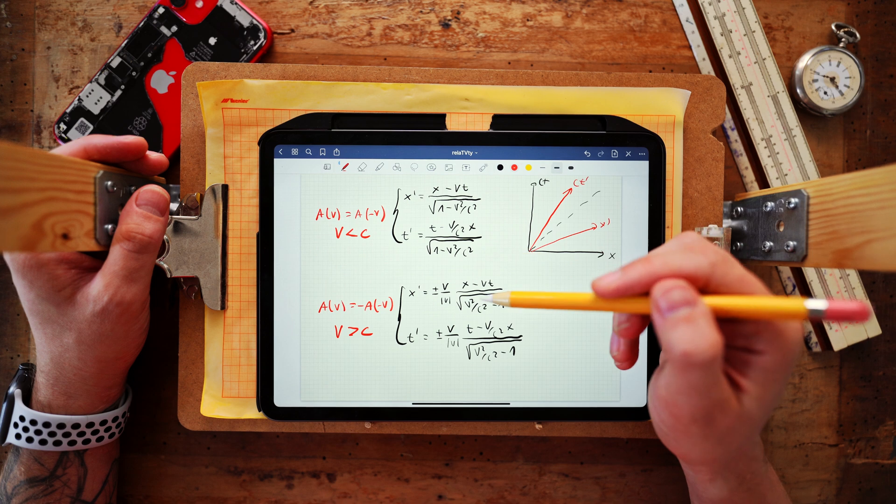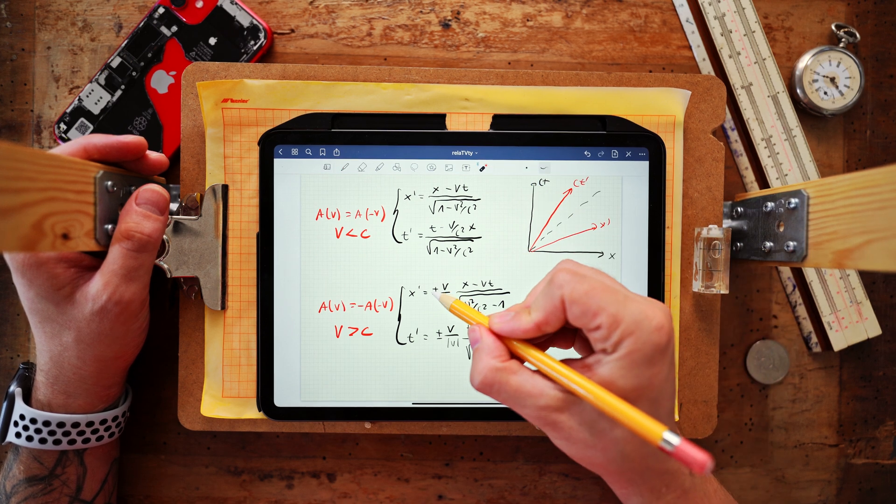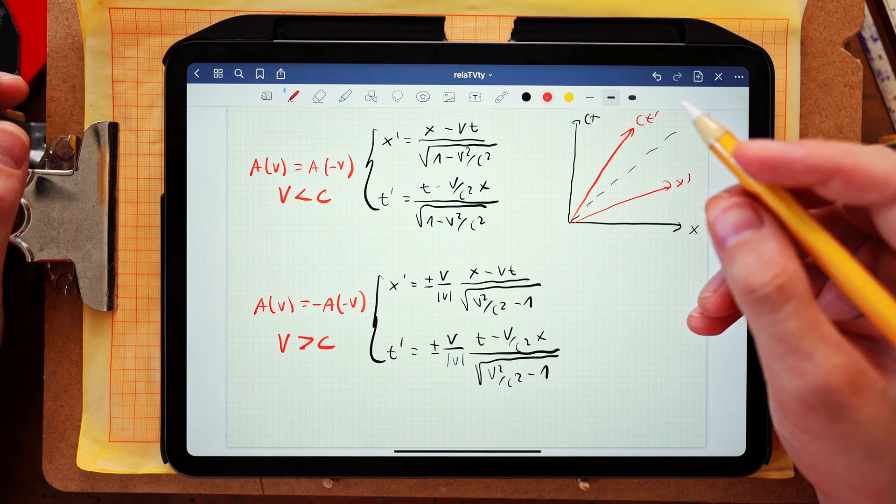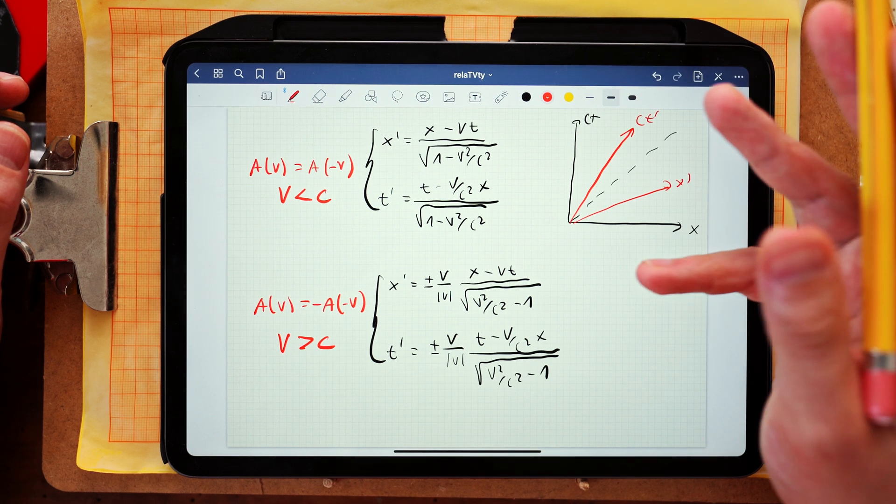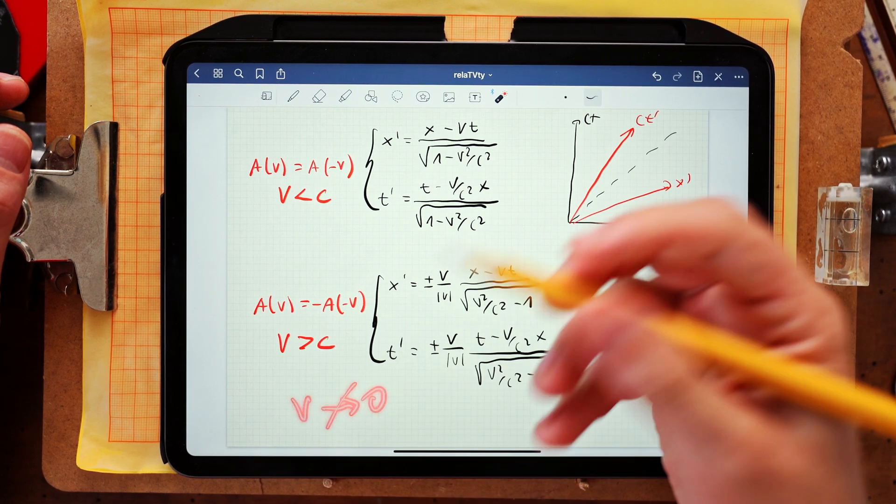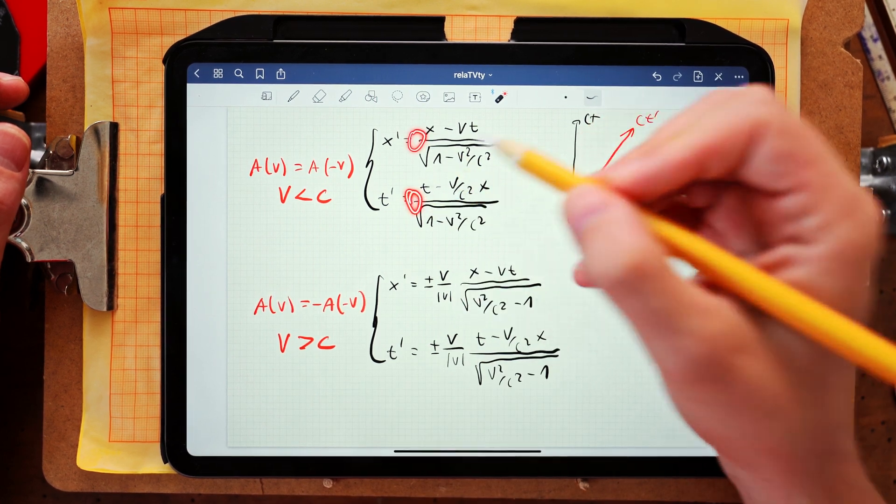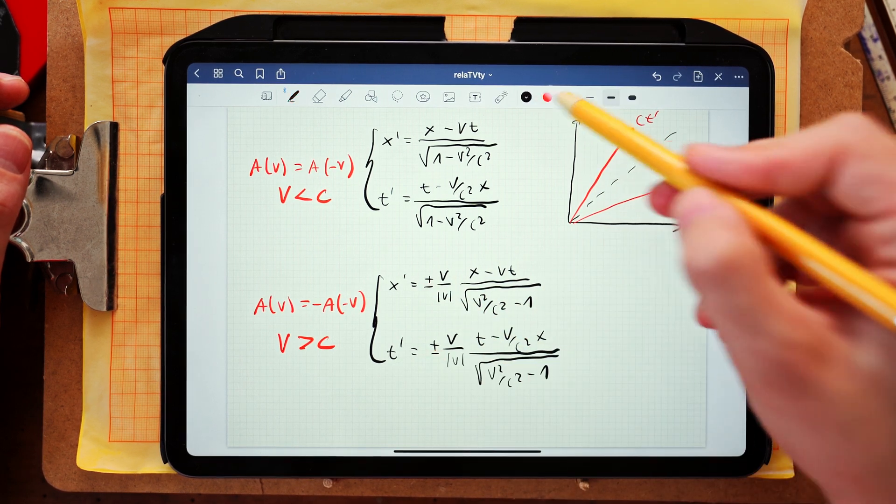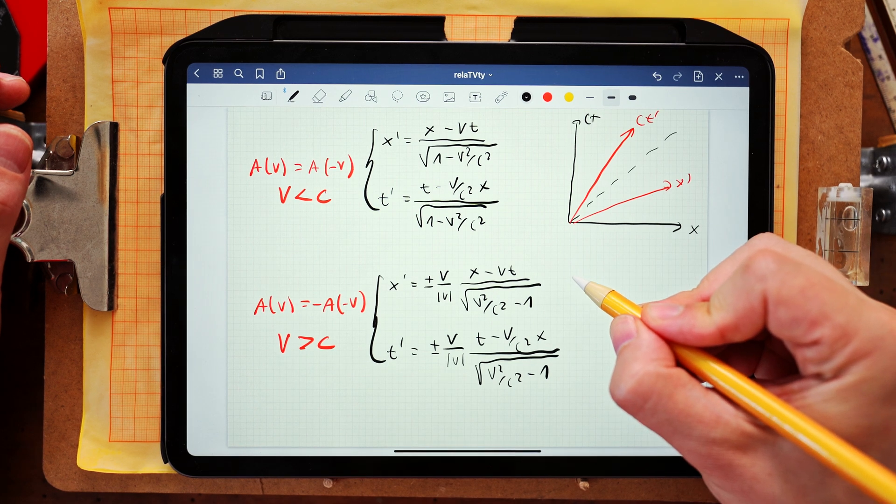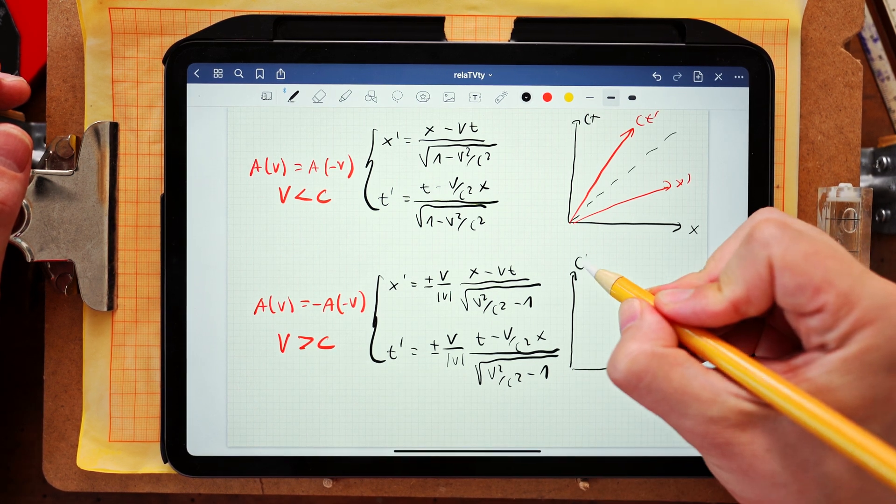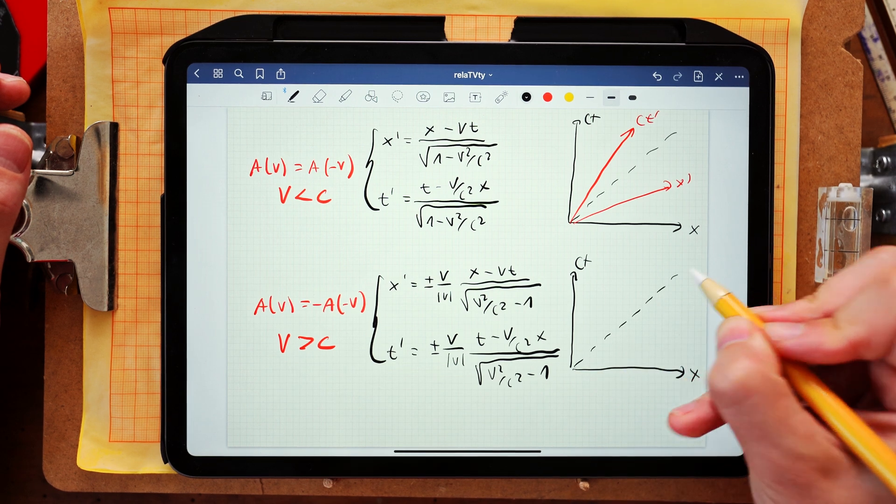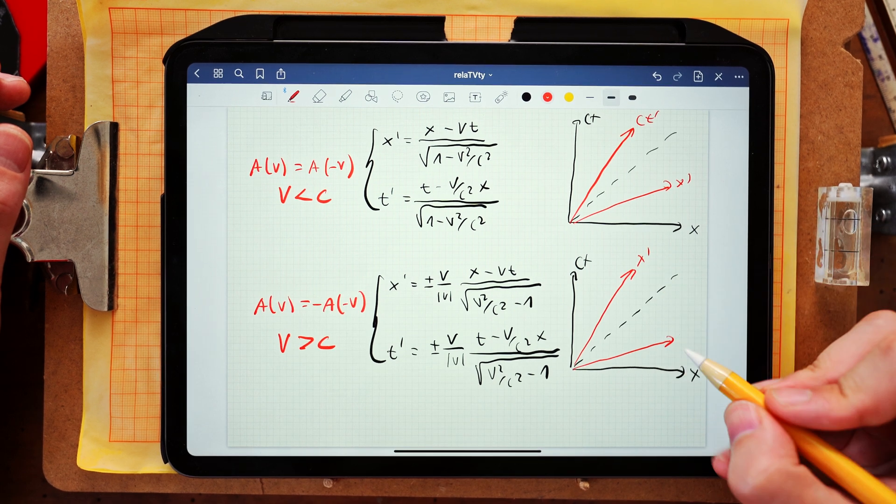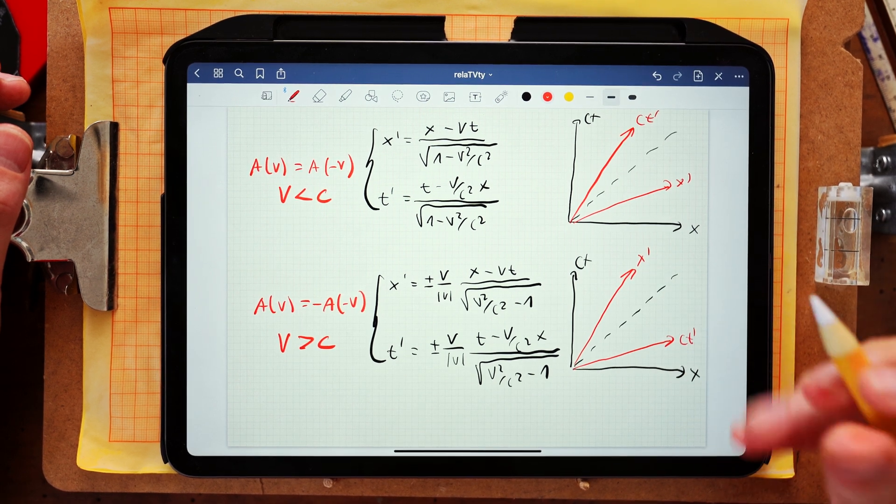We should also point out that the superluminal branch has undefined sign. It's either plus or minus. And we cannot uniquely specify the sign because we cannot take the v going to zero limit, which was possible for the subluminal branch of solutions. So the choice of the sign has to be a matter of convention. And we will pick a negative sign so that the geometrical interpretation of the whole transformation is that it is also a hyperbolic rotation of space-time. However, the angle of that rotation has to be larger than 45 degrees.